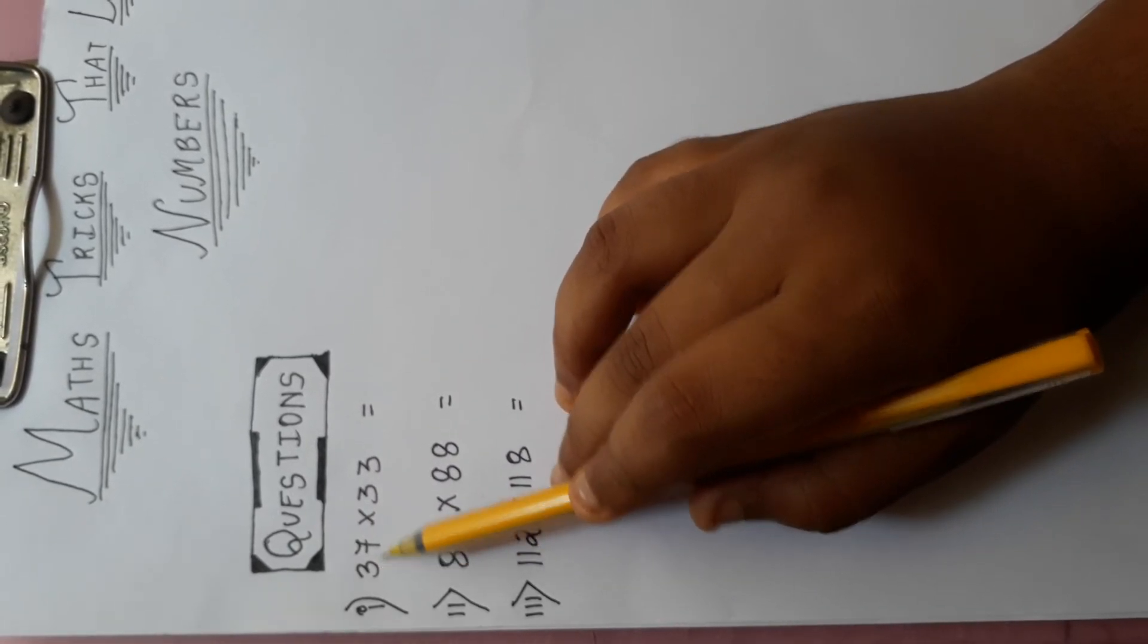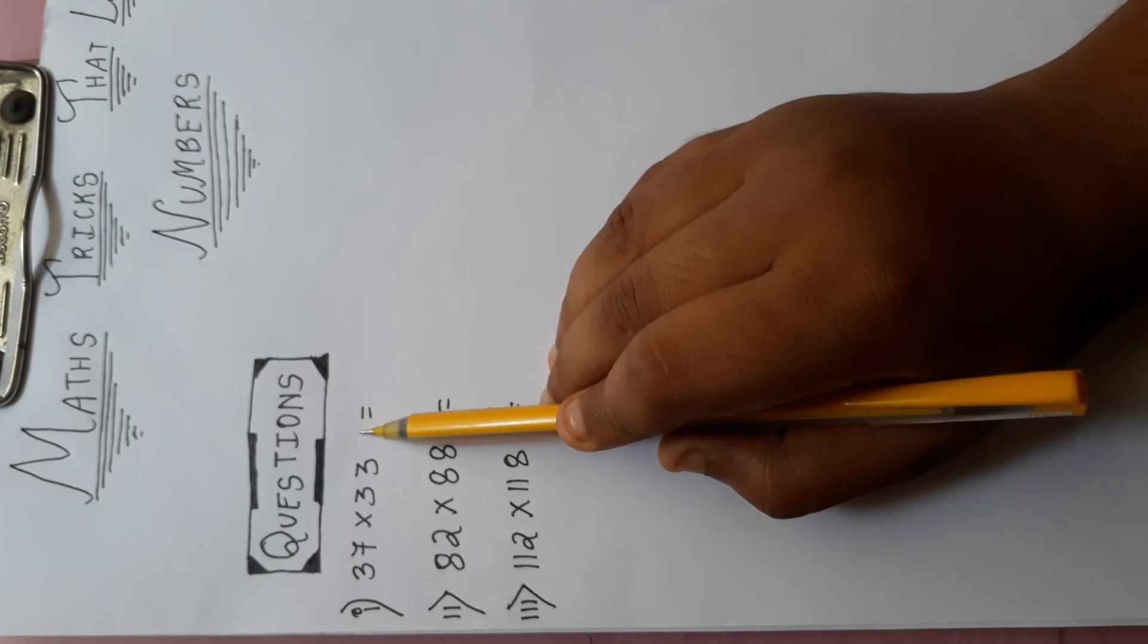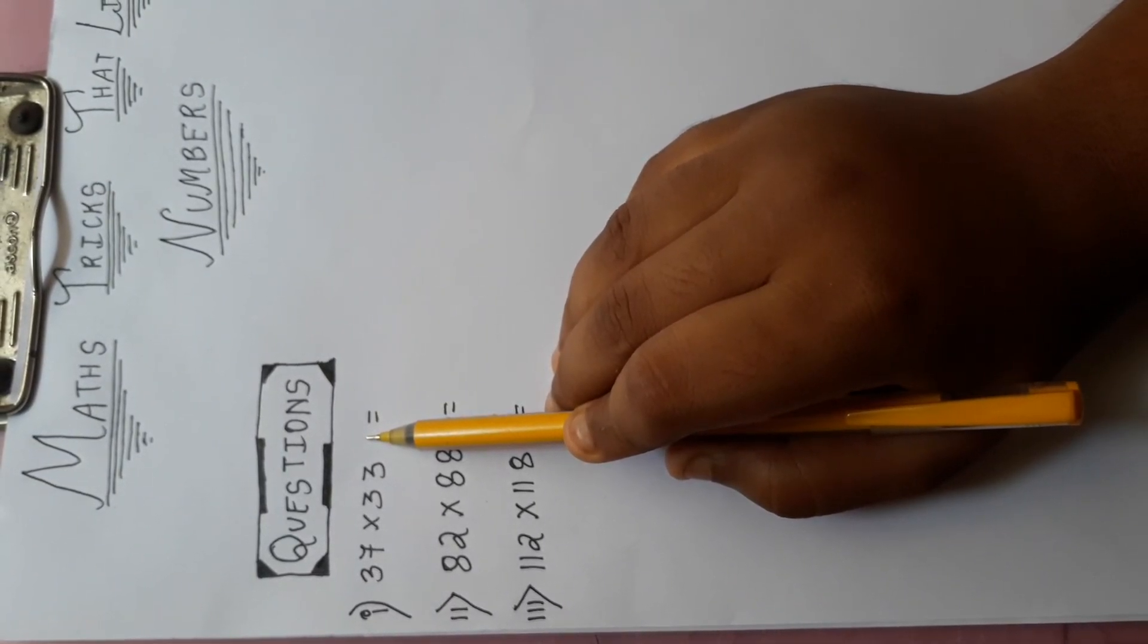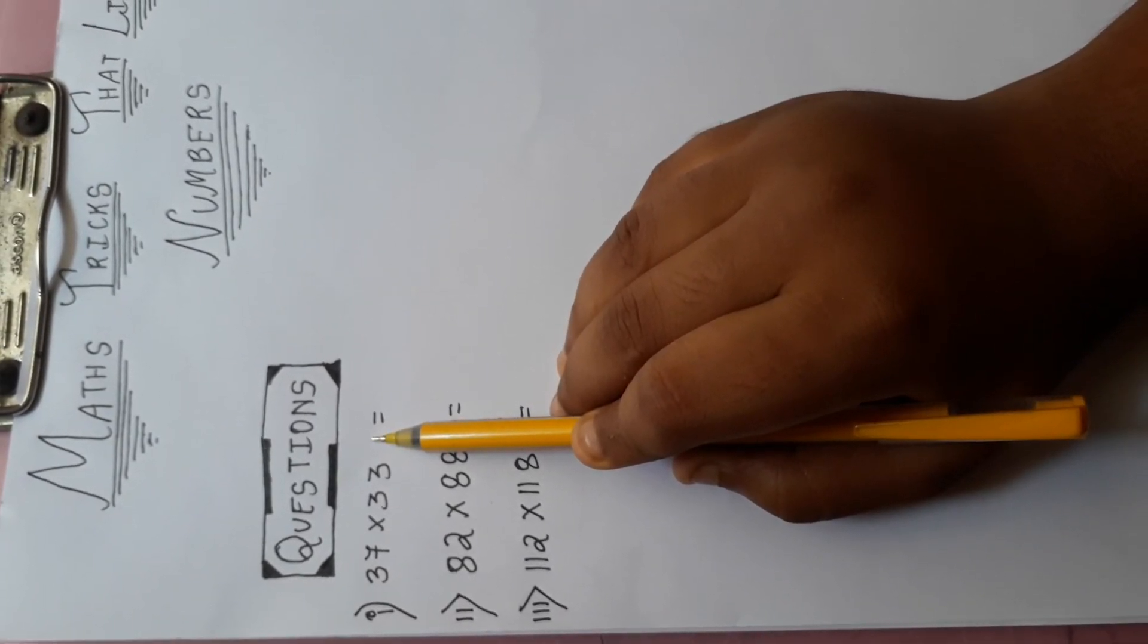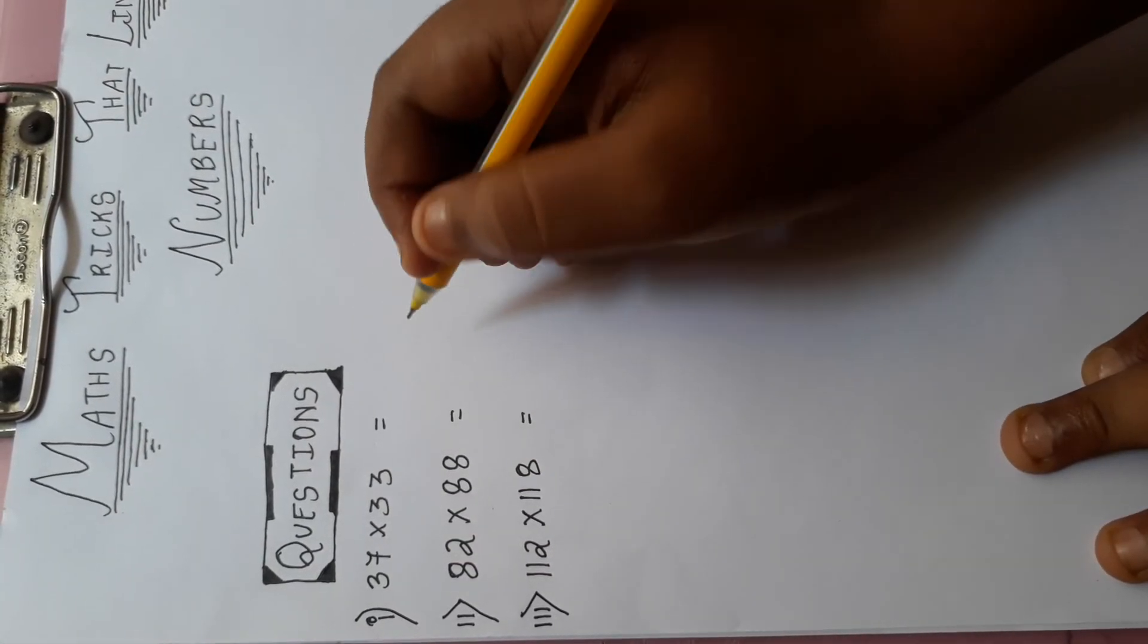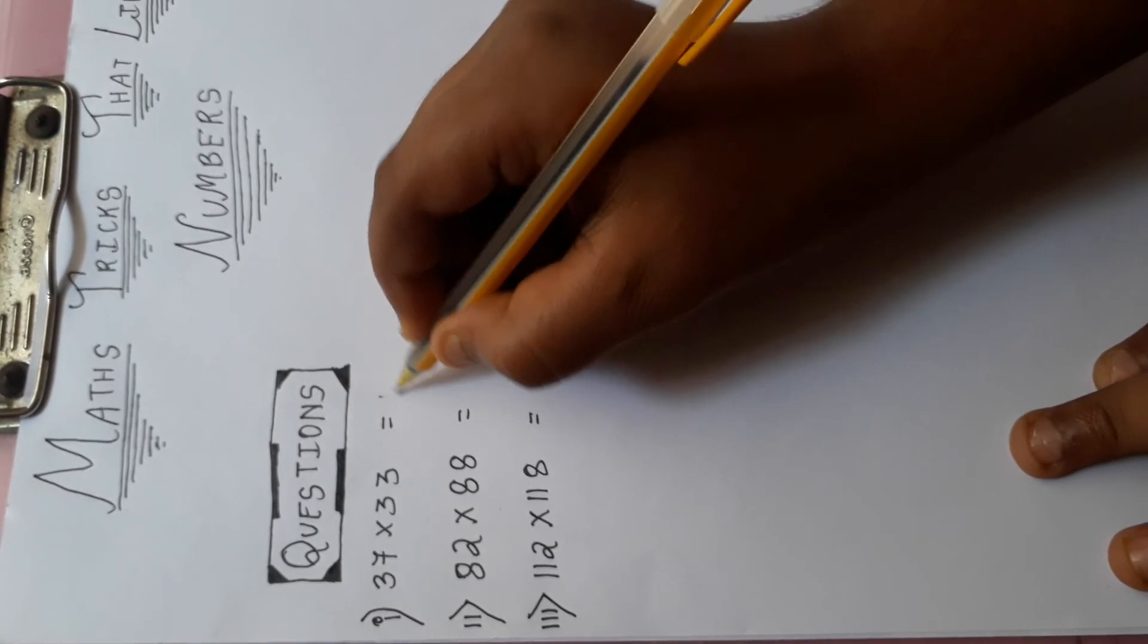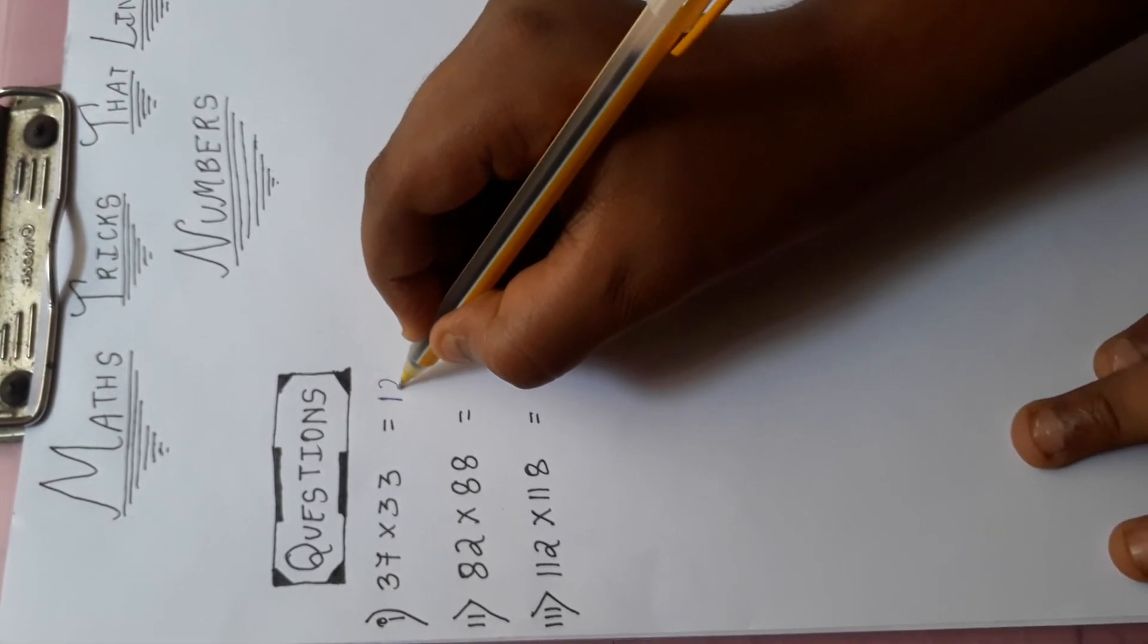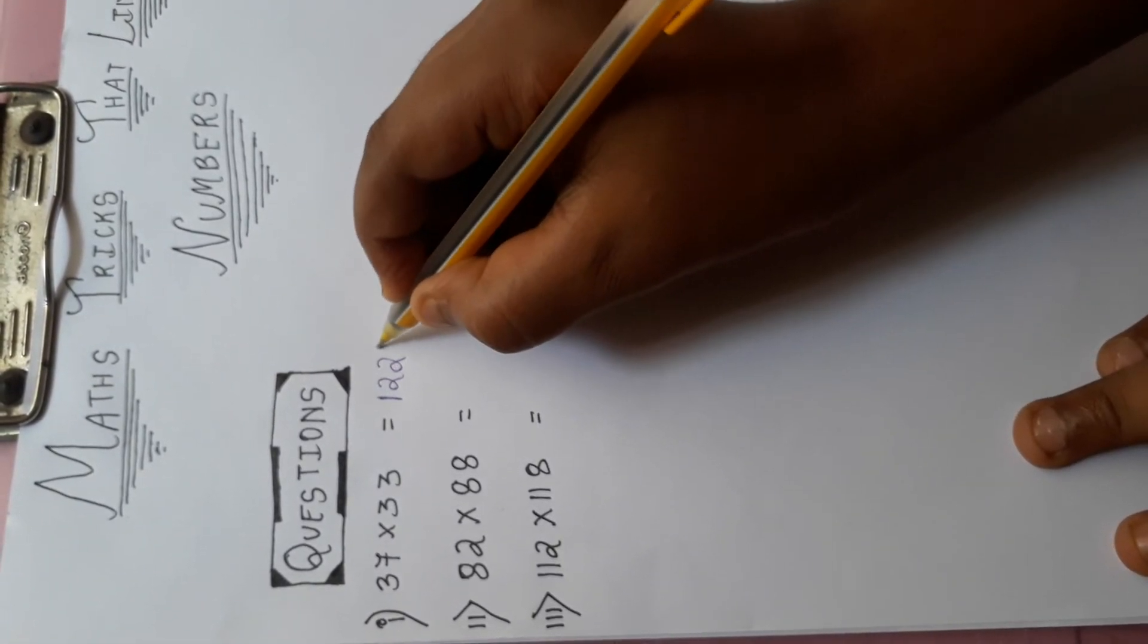The question is 37 into 33. Can you solve it within some seconds? I can do. Come, we will write the answer. The answer is 1, 2, 2, 1.